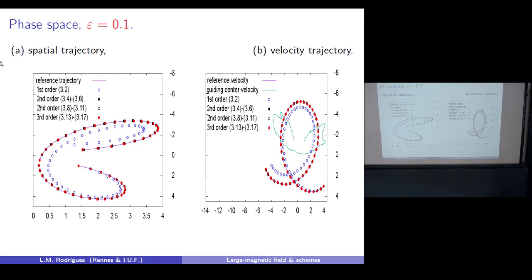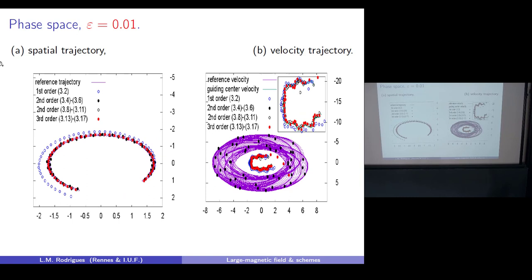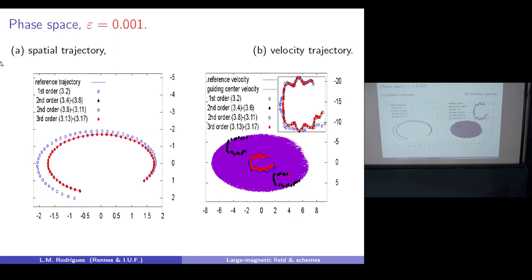Let me show some pictures. This is the spatial trajectory and this is the velocity trajectory for epsilon not small. You are good on both. The green part is the small drift. Now when epsilon gets smaller, you stay good on the spatial trajectories all the way. But the velocity side starts to show very strong oscillations. Some schemes have already given up trying to follow the strong oscillation and are just focusing on the drift; one scheme is still trying to follow.